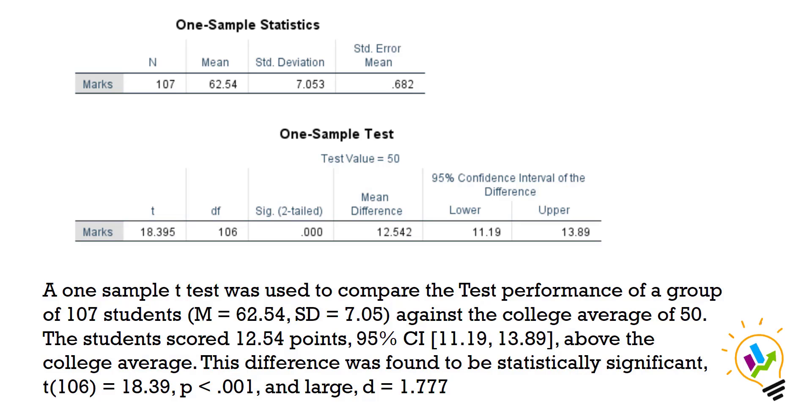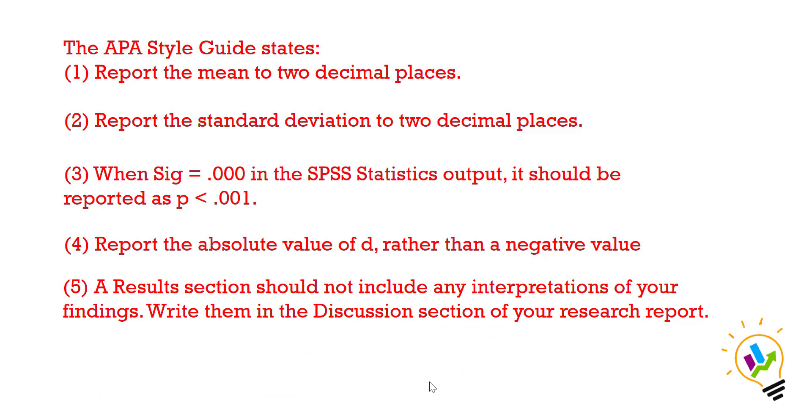Some guidelines: (1) Report the mean to two decimal places. (2) Report the standard deviation to two decimal places. (3) When significance is 0.000 in SPSS output, it should be reported as p < .001. (4) Report the absolute value of d rather than the negative value. (5) A results section should not include any interpretation of your findings. Write them in the discussion section of your research report. These are the important things you need to take care of in writing APA style.